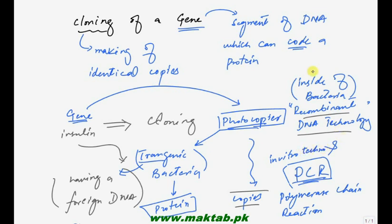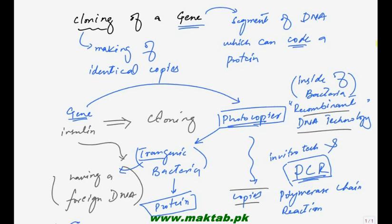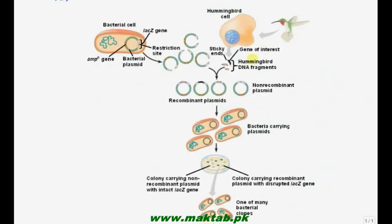PCR हम आगे पढ़ेंगे - अभी हमने recombinant DNA technology study करनी है। इसे समझने के लिए यहाँ एक diagram है। यह topic बड़ा है - आज हम इसके आधे topics पढ़ेंगे, आधे अगले lecture में। Diagram में सबसे पहले gene of interest है - उसे आपने अलग करना है। Gene of interest को सबसे पहले locate करेंगे।